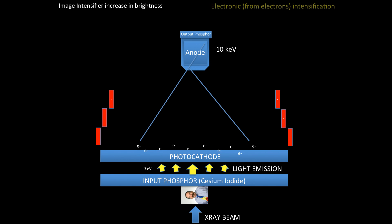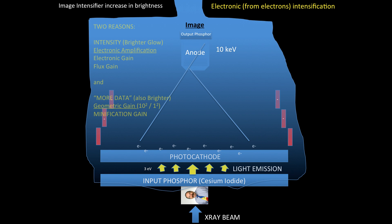The image intensifier then, it's important to realize that it creates an increase in brightness. This increase in brightness has two main components. The main components are the component that relates to the intensity, so that's the electronic amplification, the electronic gain, or the flux gain. All those are the same, different terms for the same phenomenon.